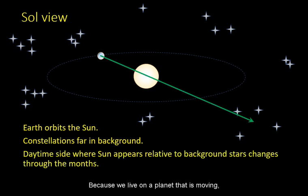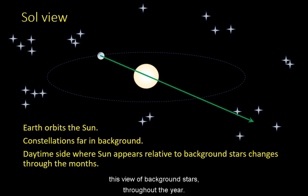Because we live on a planet that is moving, the sun will appear to slowly drift across this view of background stars throughout the year.